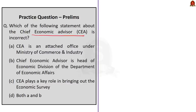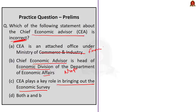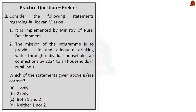The third question is about the Chief Economic Advisor — we have to find the incorrect statement. From our discussion, the CEA is the head of the Economic Division of the Department of Economic Affairs under the Ministry of Finance, and the CEA plays a key role in bringing out the Economic Survey. Statements B and C are correct, while Statement A is incorrect. Since they are asking for the incorrect statement, the correct answer is option A.